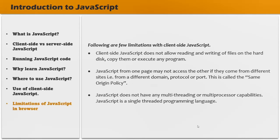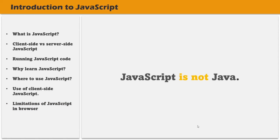These limitations exist for the sake of user safety, preventing a web page from accessing private information or harming user data. Some of these limitations do not exist when JavaScript is used outside the browser — for example, when used as a server-side language, JavaScript can read and write files. Before wrapping up, one important point: JavaScript is not Java. JavaScript and Java are two completely different programming languages, not related to each other in any way. Many beginners get confused, but that is not true — JavaScript is completely different from Java.